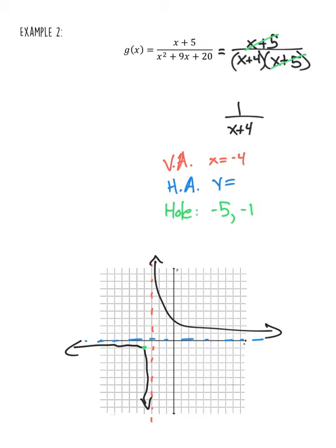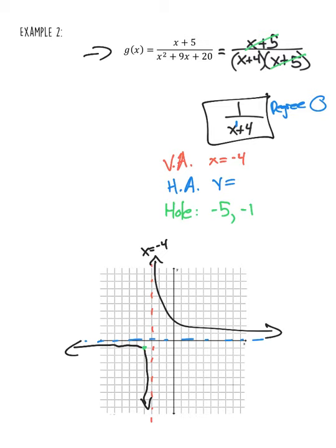For this next one, I did some of the work beforehand to keep the video short. Looking at the original equation, if I factor the bottom, there's something that cancels out — the x plus five — and it gives us the reduced rational function to graph. What x value would give me zero on the bottom? That's x equals negative four, so that's my vertical asymptote — x is not allowed to be negative four. The horizontal asymptote: the degree on top is zero because there's no variable up top. If you have a lesser degree on top than the bottom, your horizontal asymptote is going to be zero.